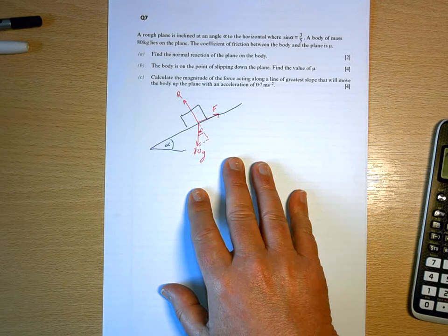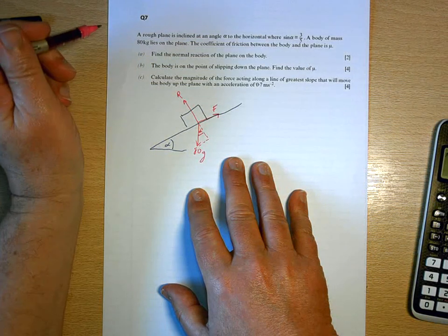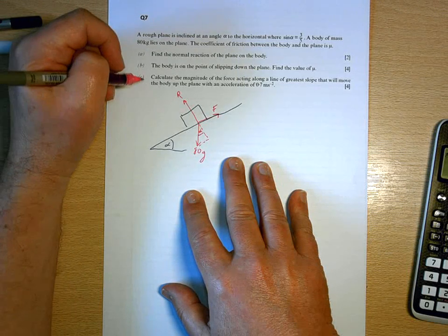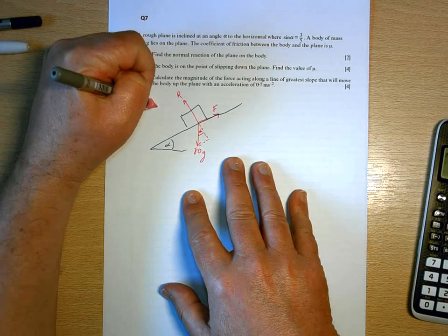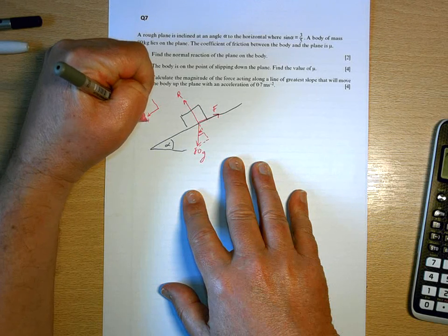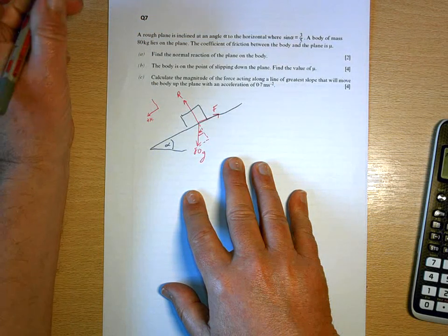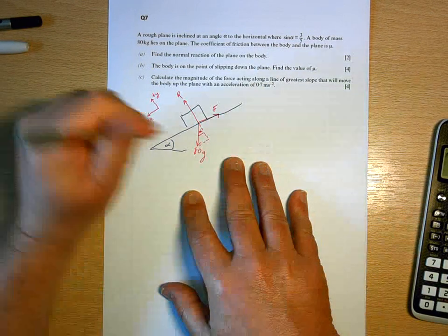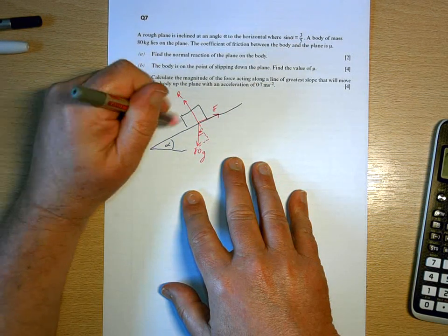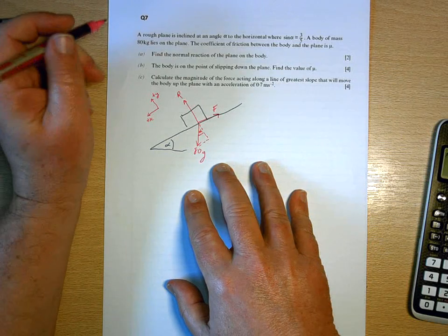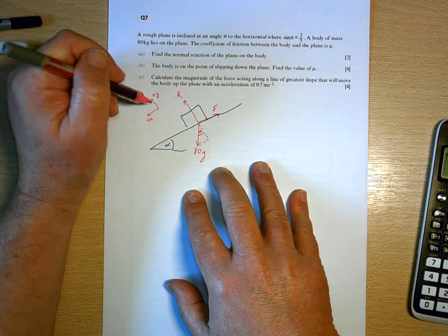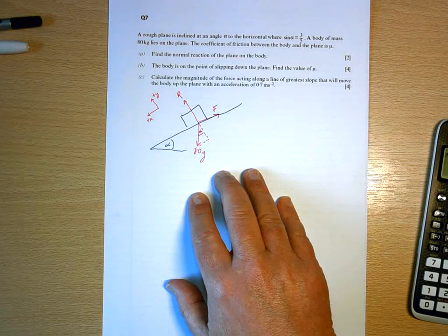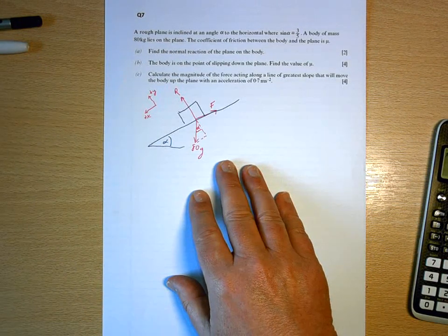That's all the information we've got for a and b, so I am going to take plus x to act parallel to the plane and plus y to act perpendicular. Plus x is down because that's the way it's trying to move, but it doesn't matter as long as it's clear.